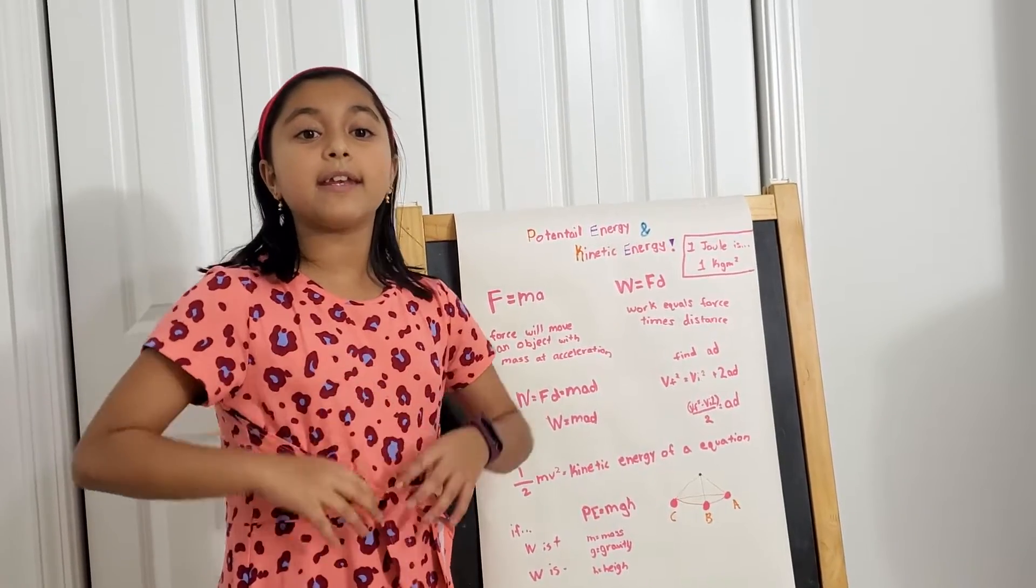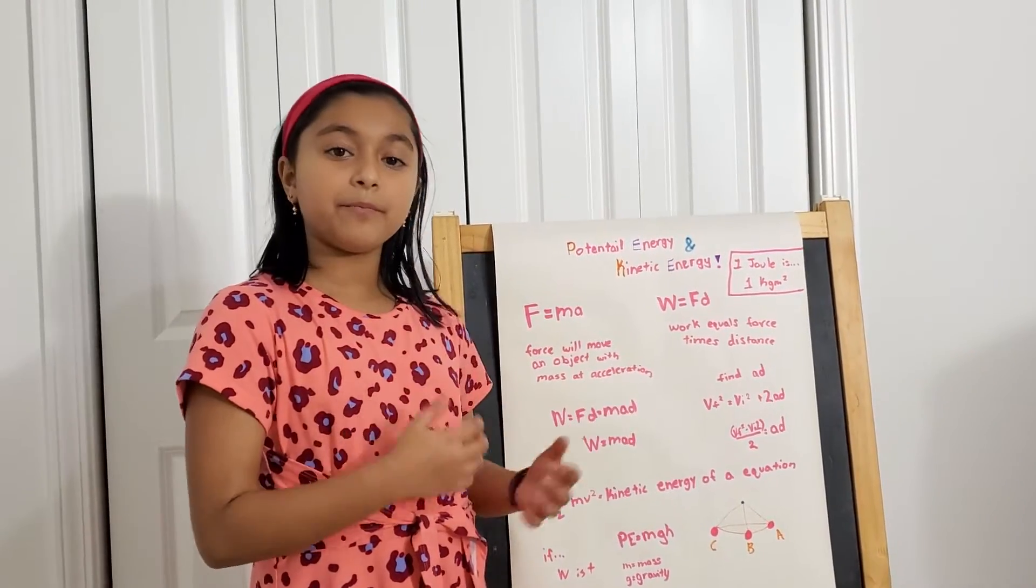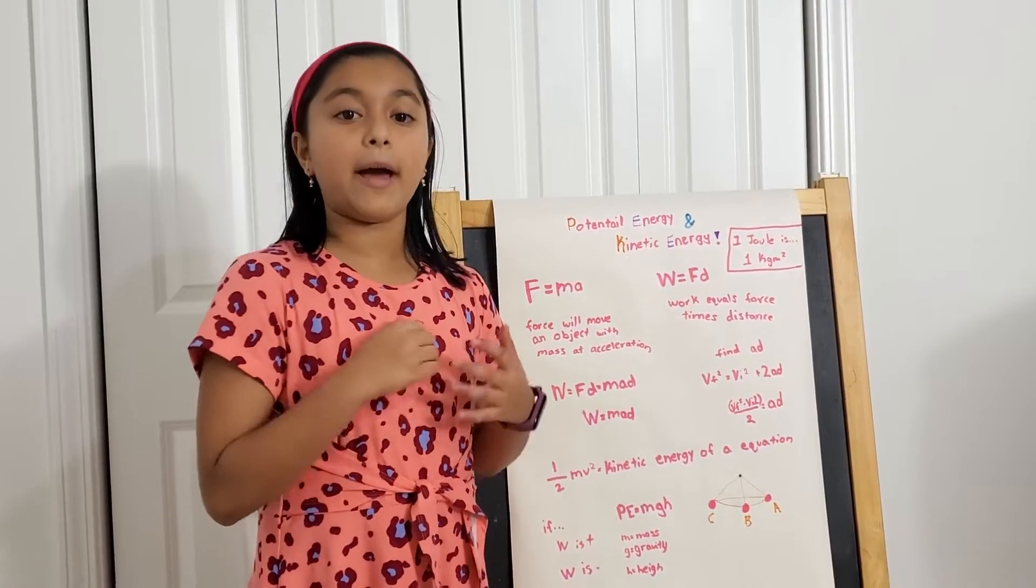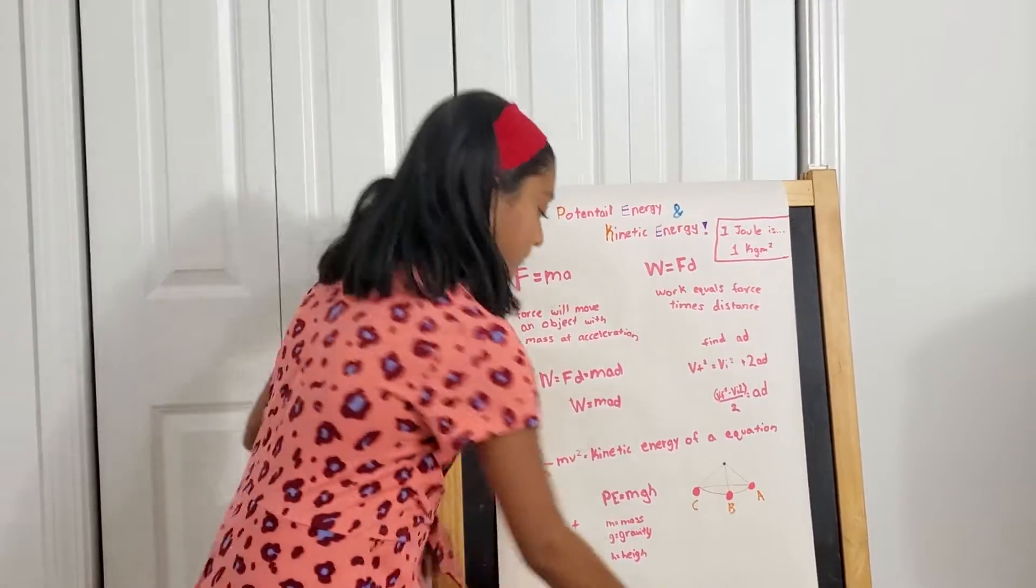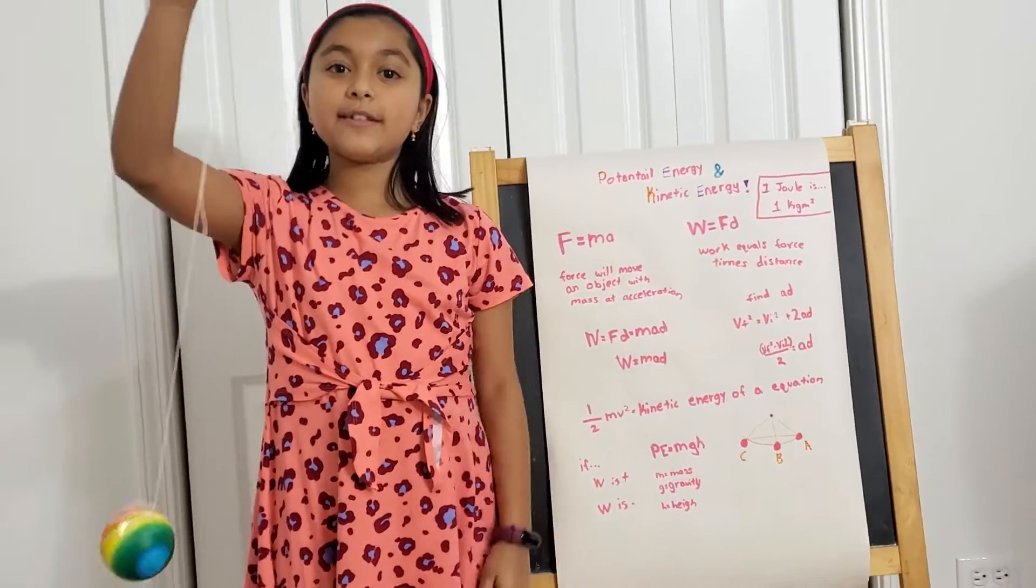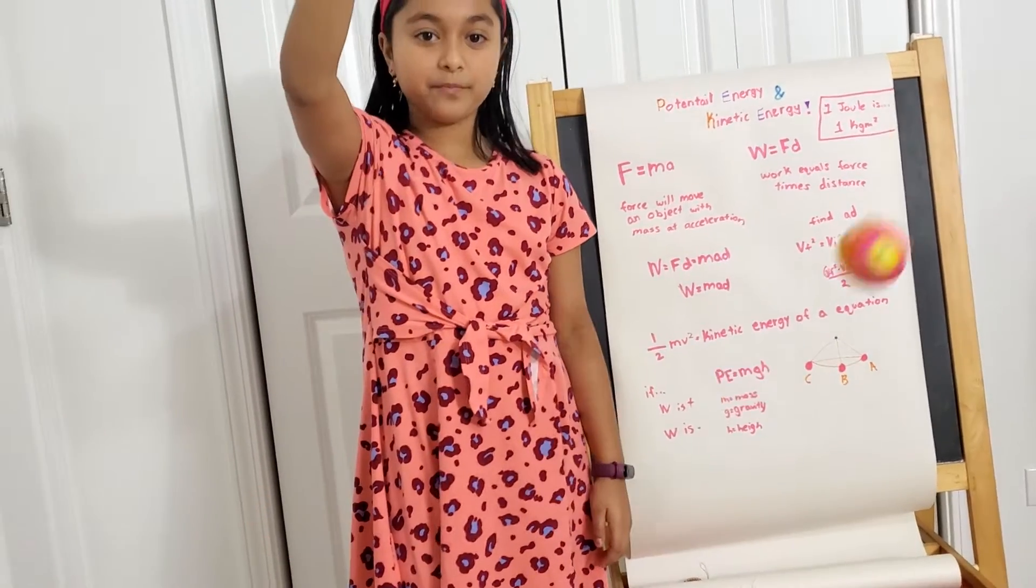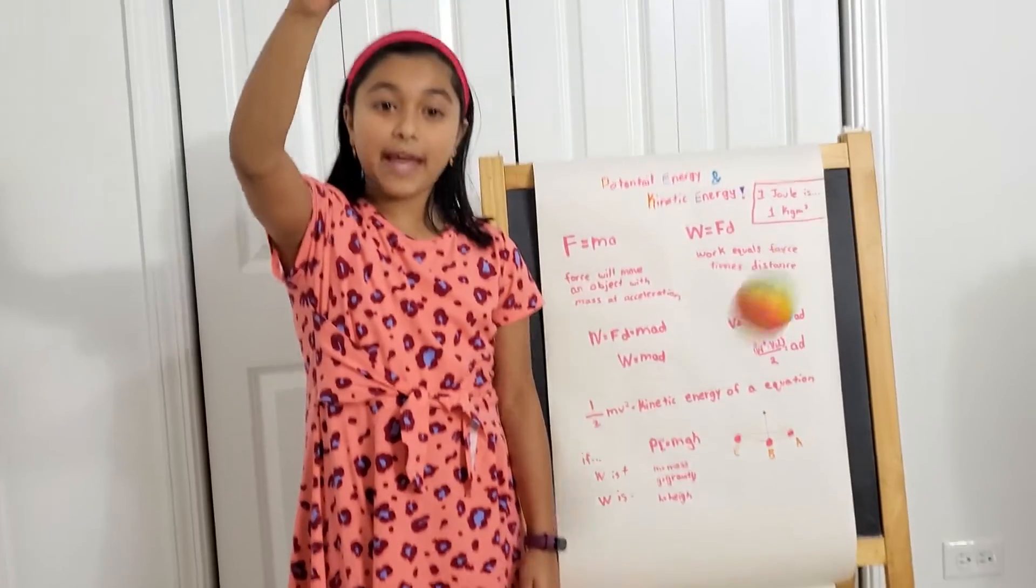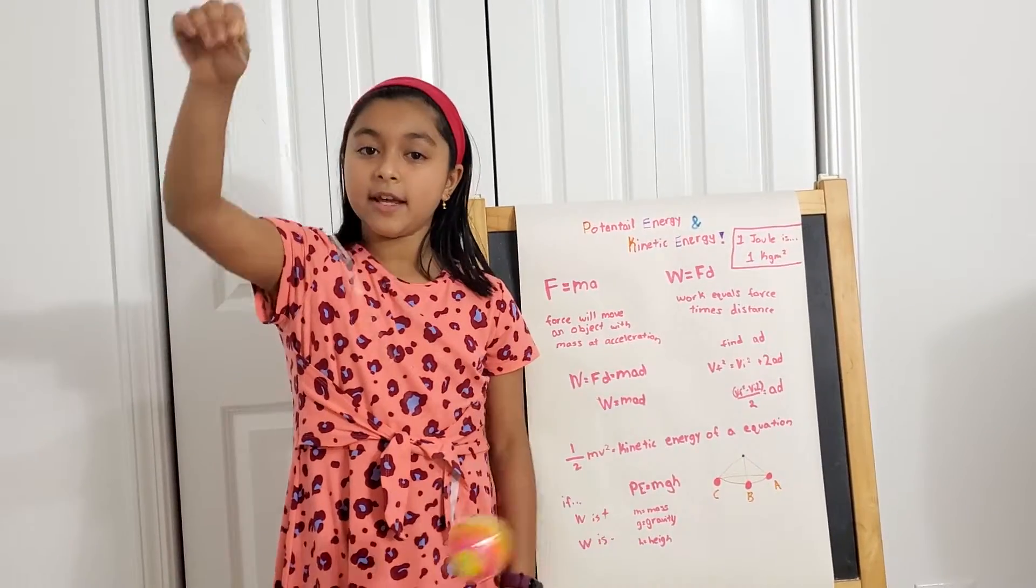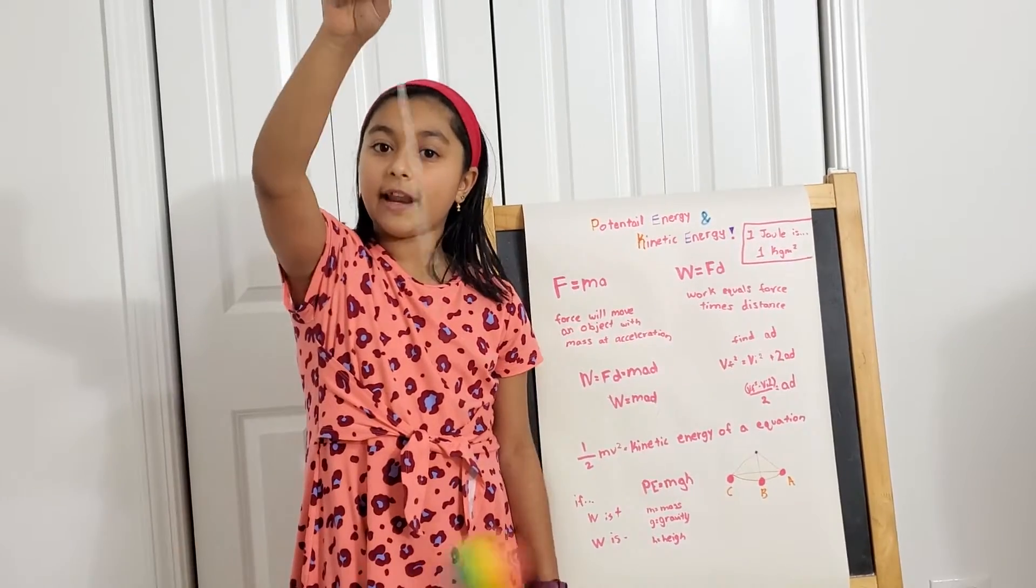But as it goes back to its form of C, it's going to have zero. The potential energy will come back. So let me show it to you. So it's at the form of A, but I'm swinging it. So when it's going from A to B to C, it's gaining potential energy and moving with the kinetic energy.